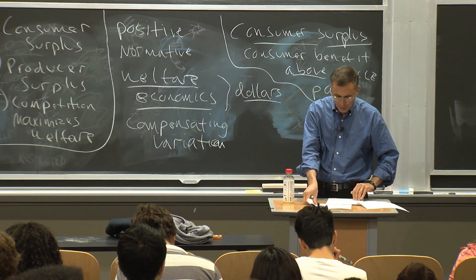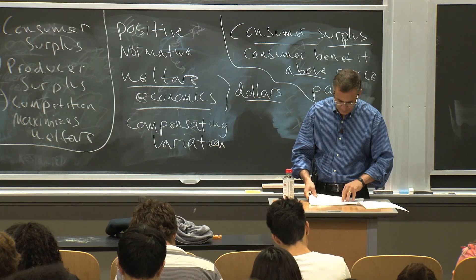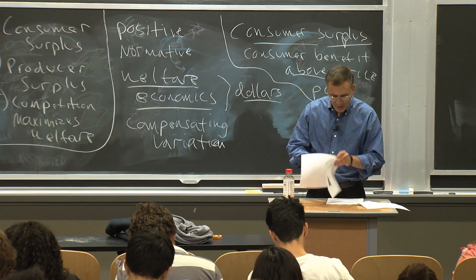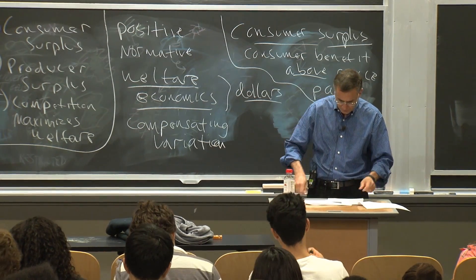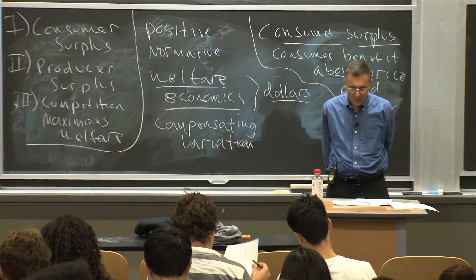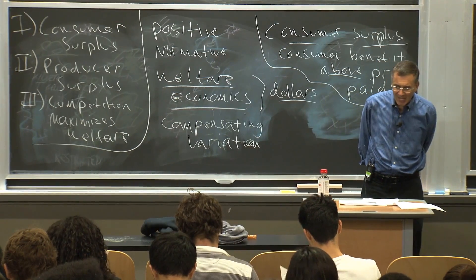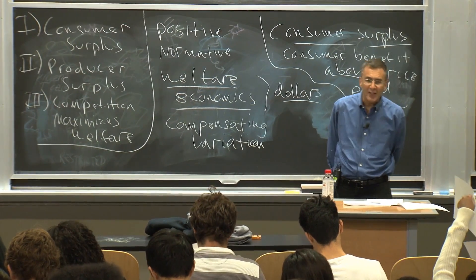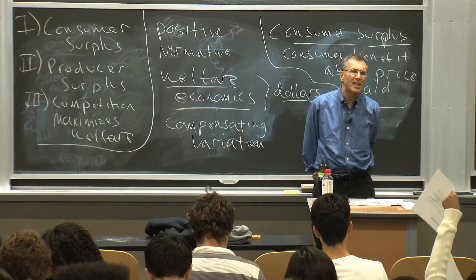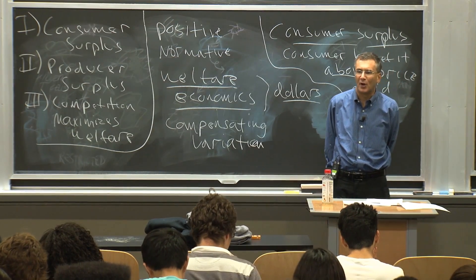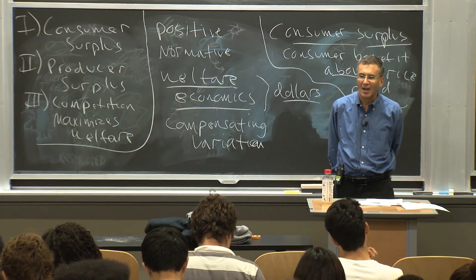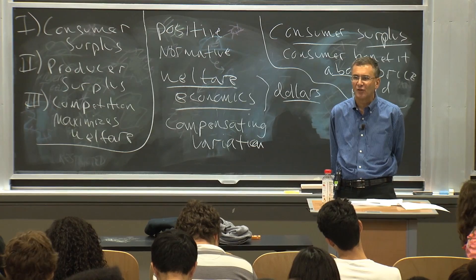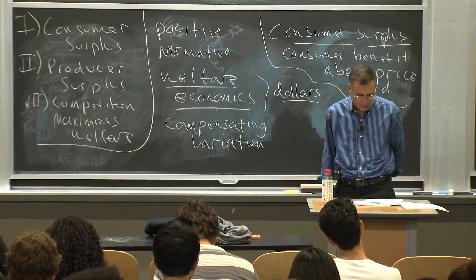So let's go to figure 13.1. Here's my daughter's demand for Katy Perry songs. Now this is tricky because it's discrete — really, this line should be a step function, not a line. So just bear with me. Imagine she could buy continuous shares of Katy Perry songs.